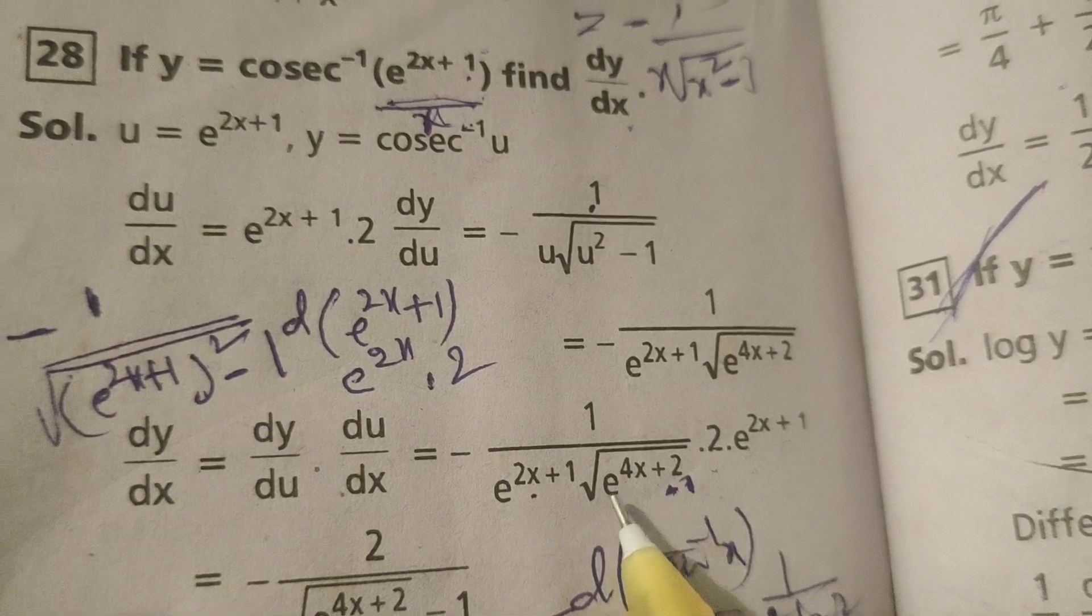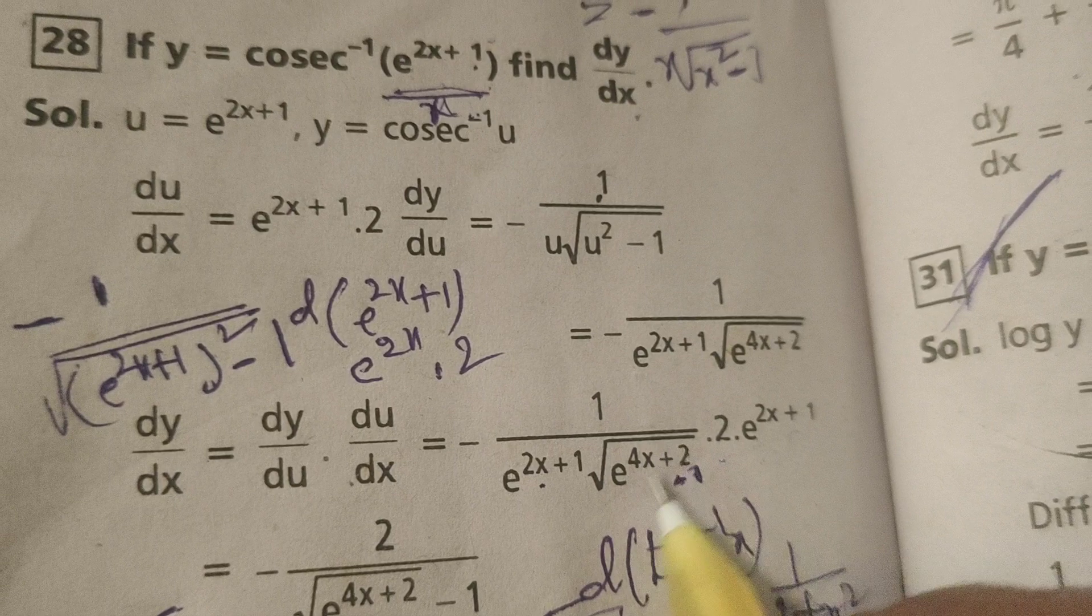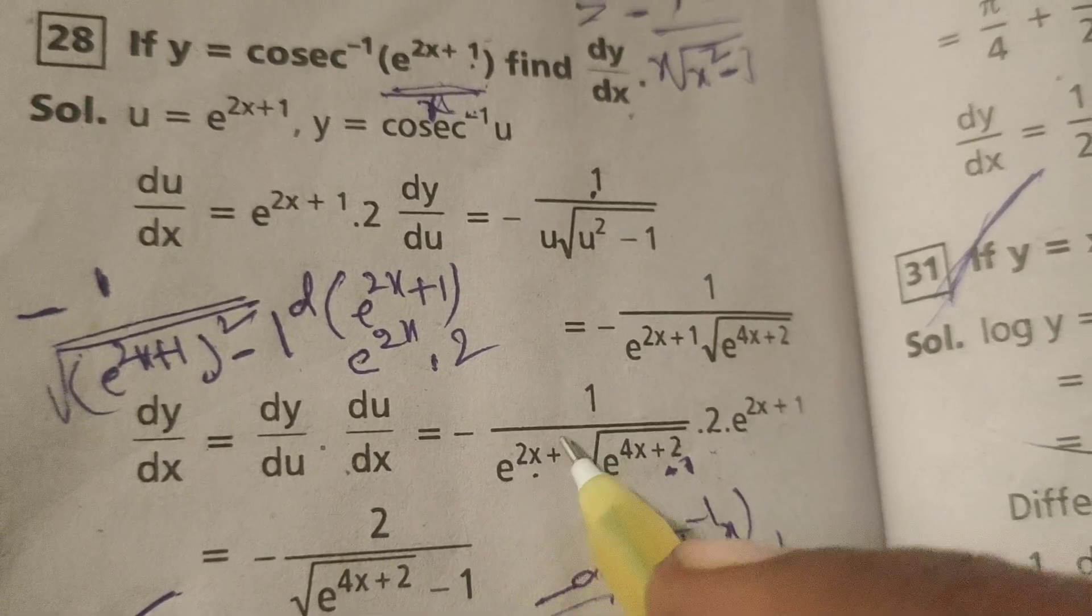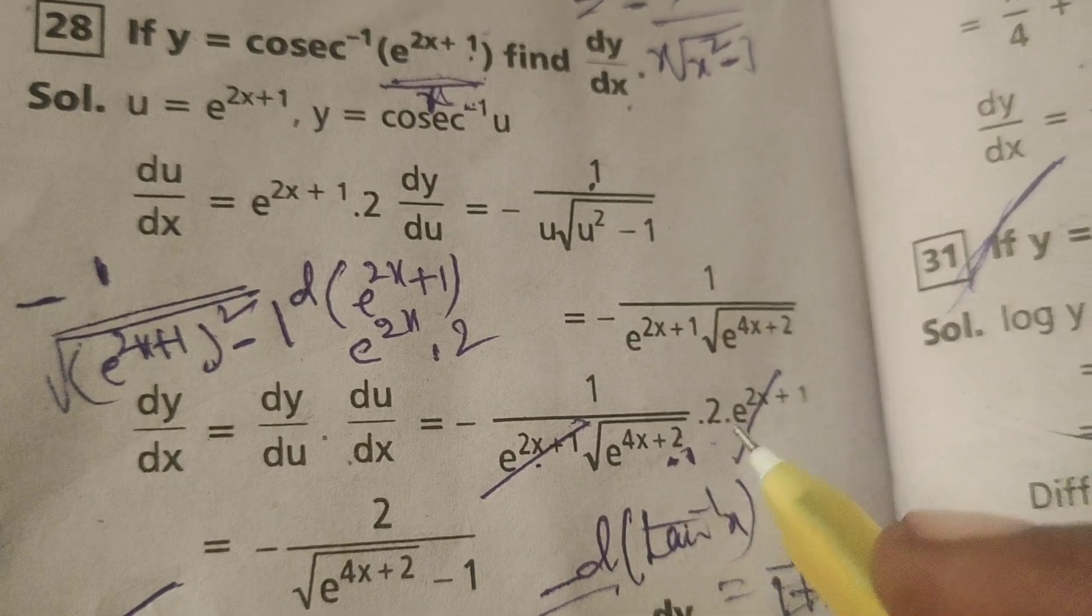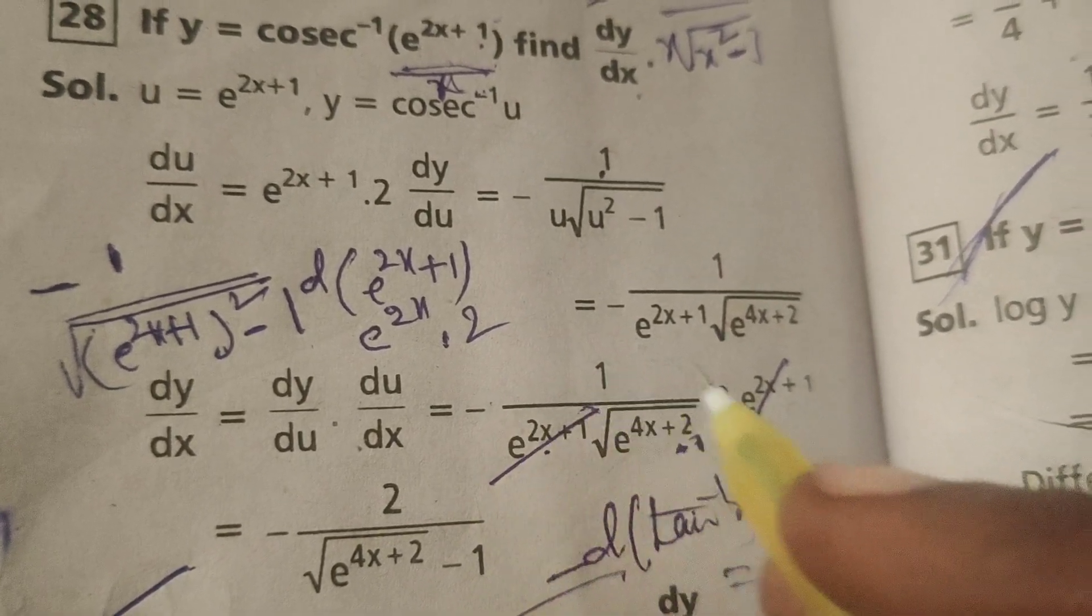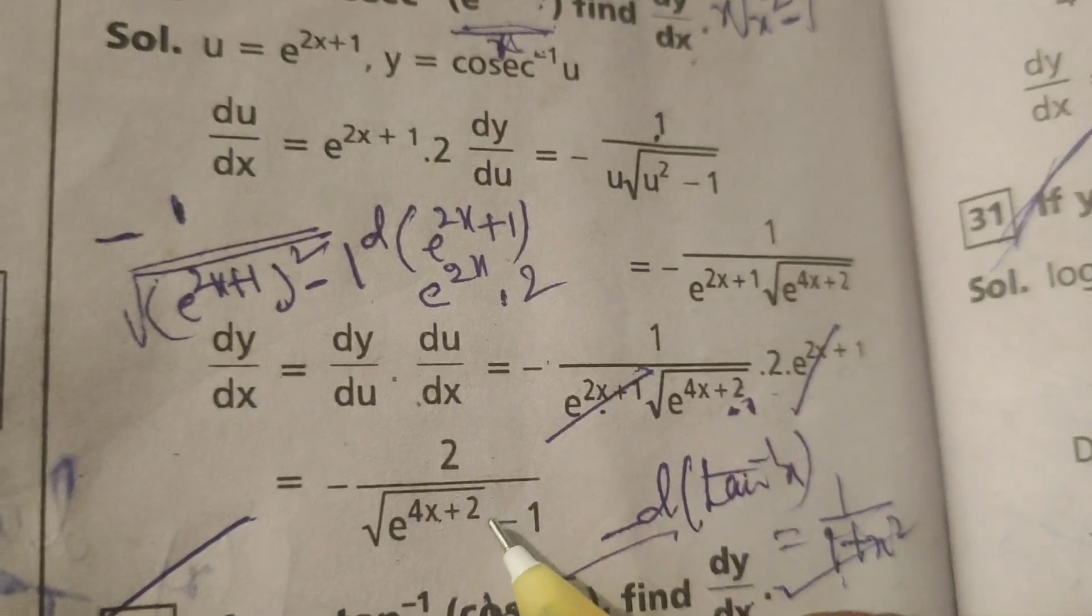Here e power 2x plus 1 whole square means e power 4x plus 2. Therefore, e power 2x plus 1 gets cancelled. Minus 2 by e power 4x plus 2 minus 1.